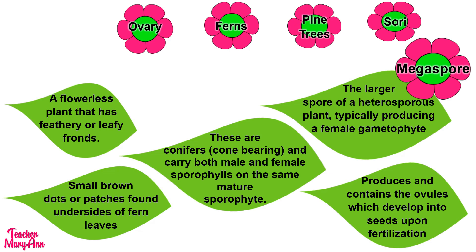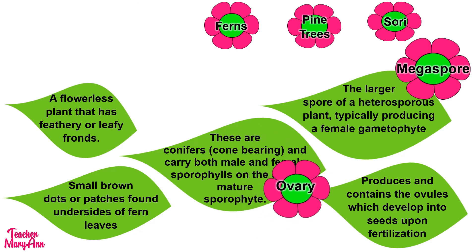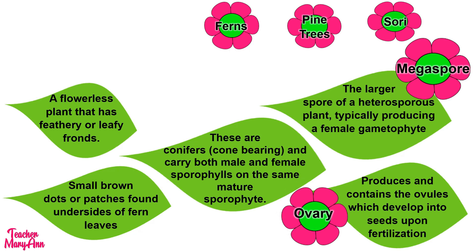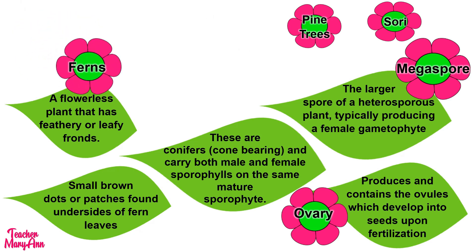How about the next flower? Ovary. Okay, it goes with this one: produces and contains the ovules which develop into seeds upon fertilization. The next flower is ferns. Ferns goes here: a flowerless plant that has feathery or leafy fronds.